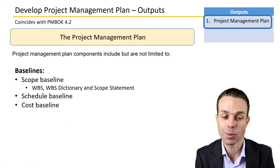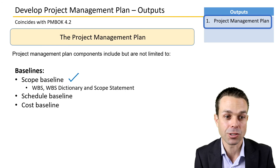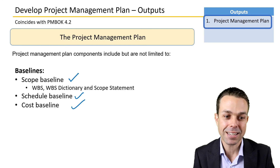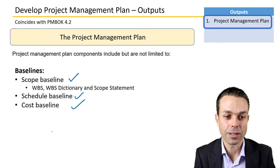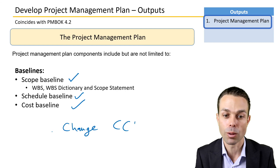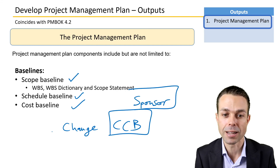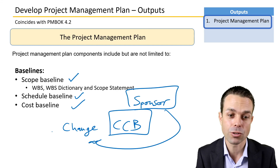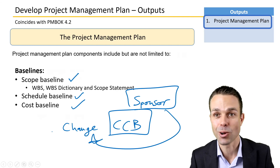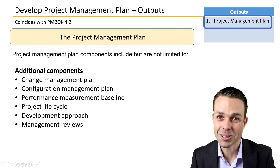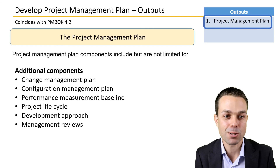You'll also have baseline documents. The scope baseline is locked at a point in time, as are the schedule and cost baselines. To make any changes going forward, you'll need to go through the change request process and the change control board, which is usually made up of the sponsor and a few other people who need to approve any change before it goes back into the baseline documents.